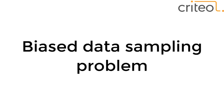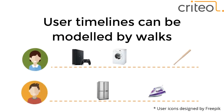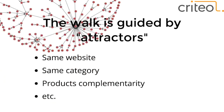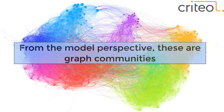We also do work to remove bias in data sampling. We can observe user timelines from the perspective of random walks: a random walker shopper model where vertices are products and edge weights are likelihoods of a shopper viewing another product. The walk is guided by attractors like the website — if a user is on eBay, the next item is likely from eBay too — and also by category, product complementarity, and other factors we'd like to recover.